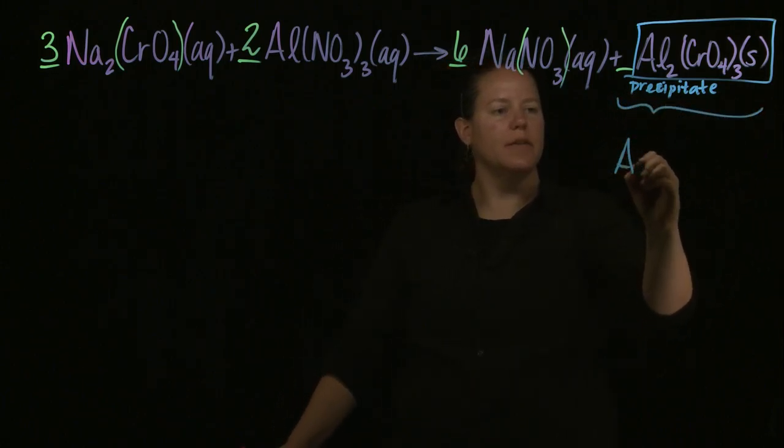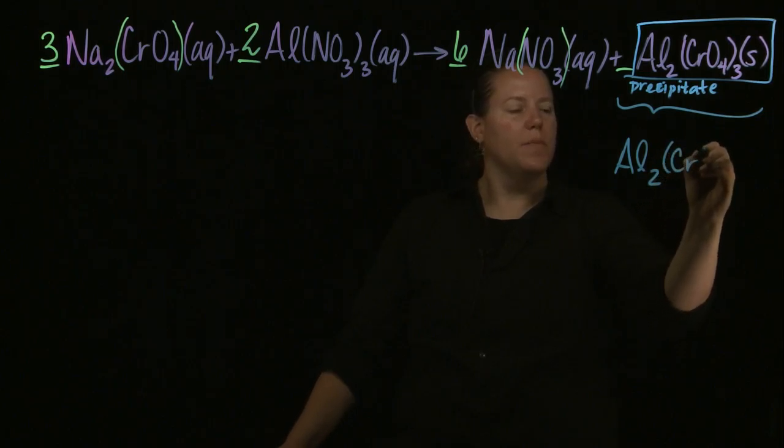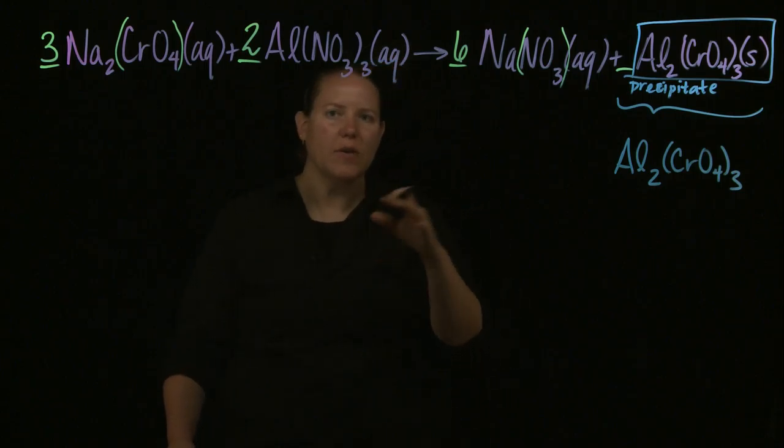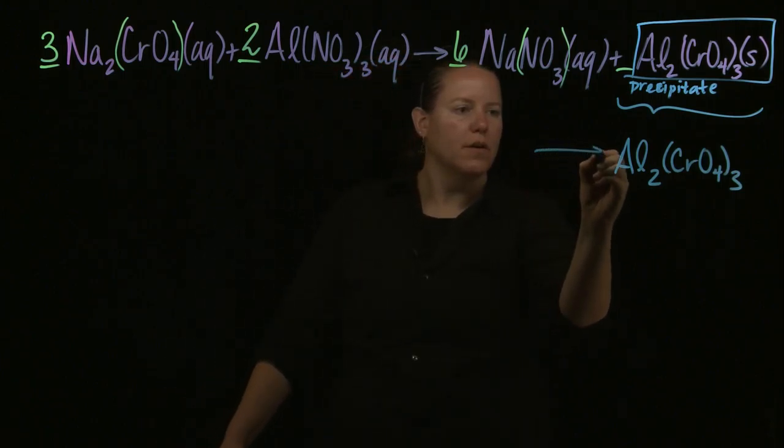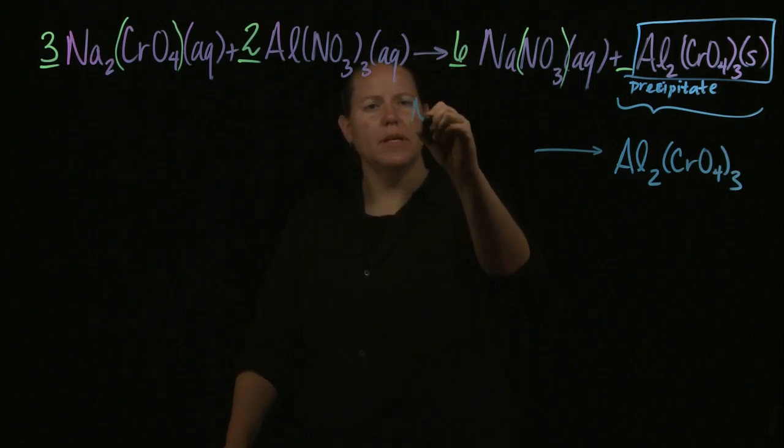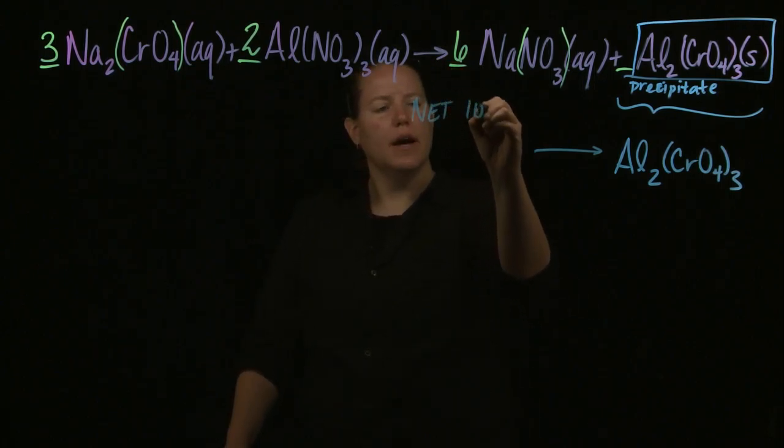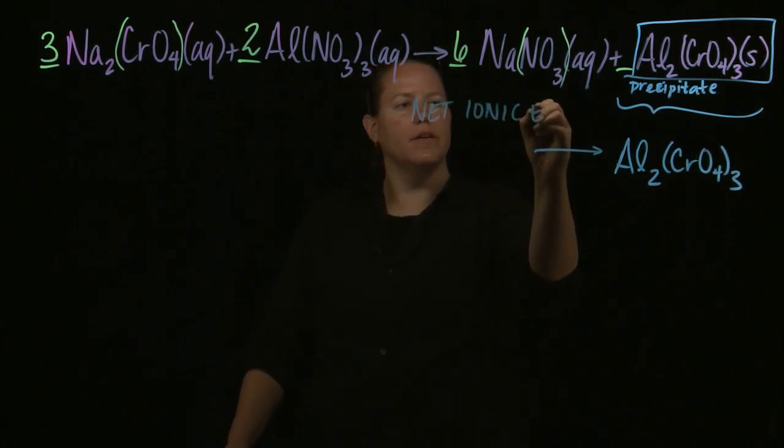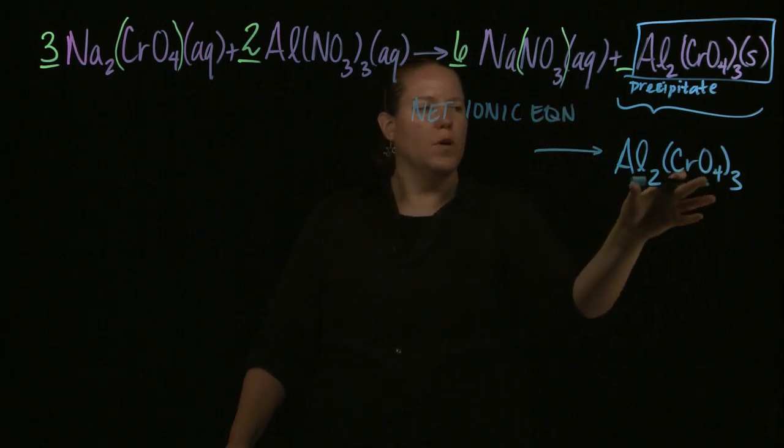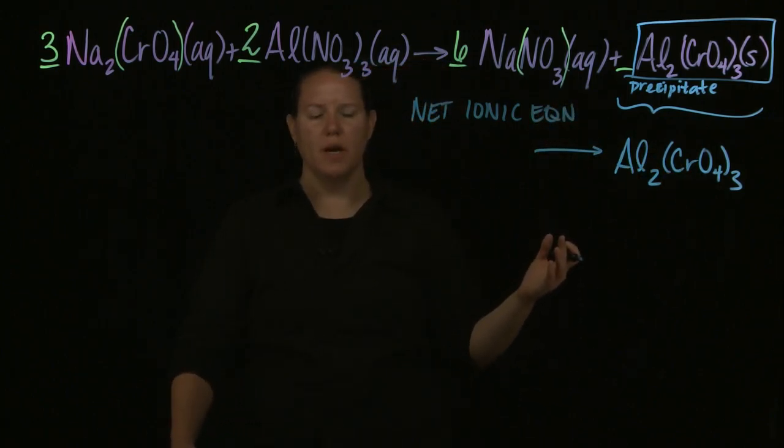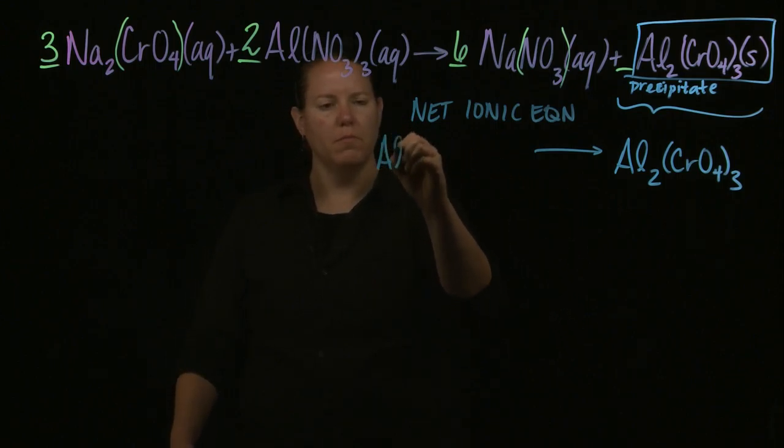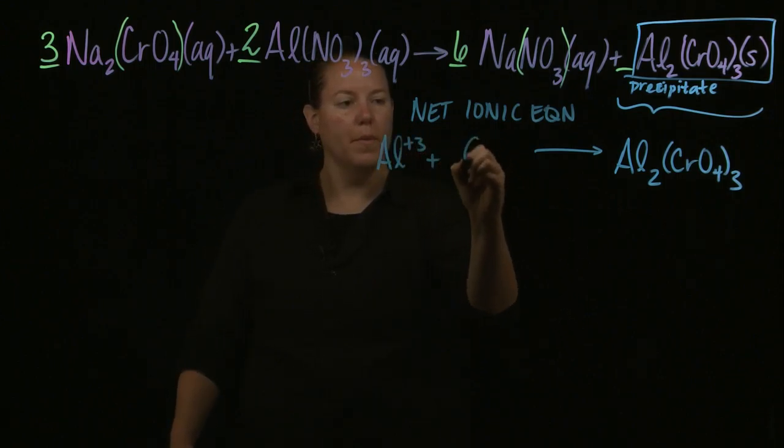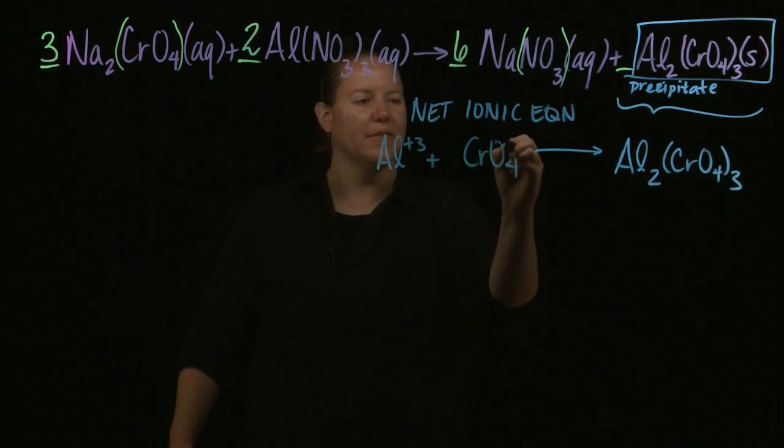If you take that down, the other piece of a net ionic equation is that it has to be an ionic equation. There's a reason why it's called an ionic equation. So, because it's a net ionic equation, I need to tell what two ions make that up. And what two ions make up aluminum chromate? Well, aluminum and chromate. The two ions that make that up.